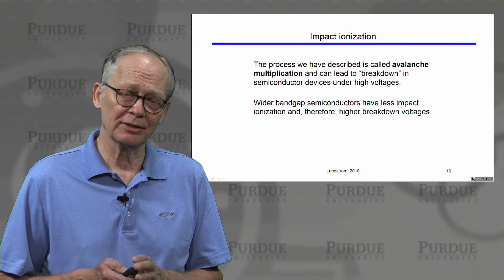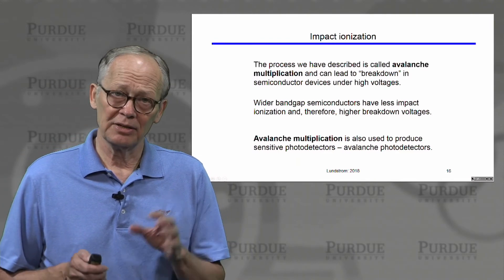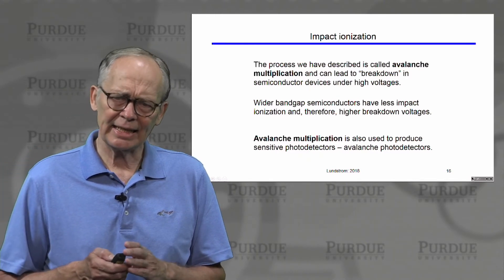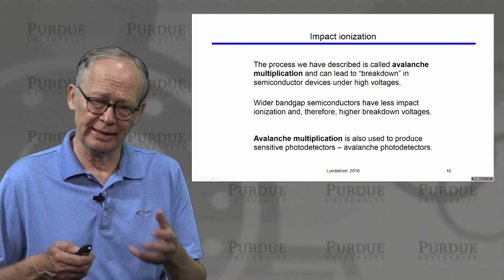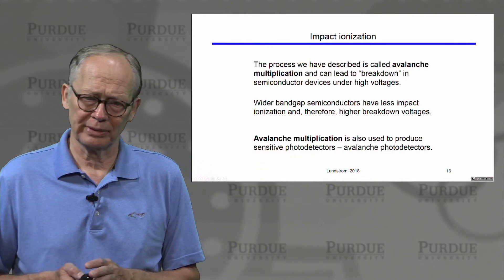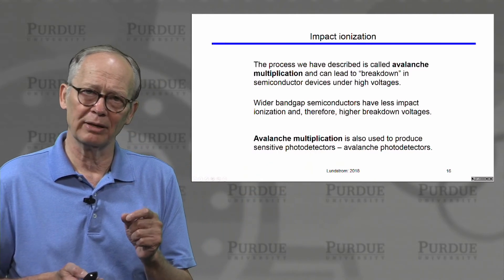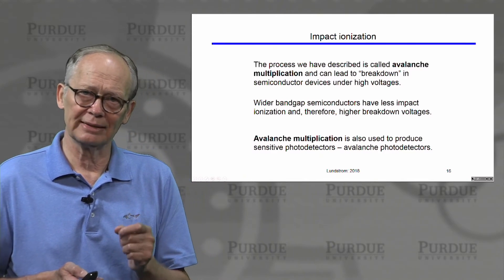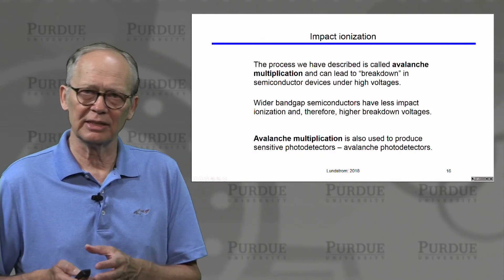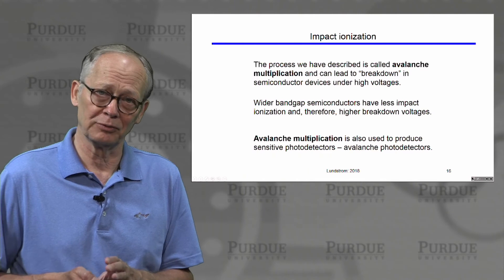If we're looking to use semiconductor devices at high voltages, we look for large band gap materials. However, impact ionization is not only detrimental — it can also be used beneficially. There are devices called avalanche photomultipliers. These devices can be so sensitive that a single photon creating a single electron-hole pair can, through this avalanche multiplication process, create large enough currents to detect a single photon. So it can either be detrimental to device performance or the very basis for a device's operation.